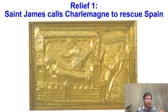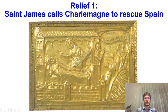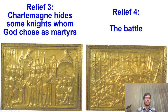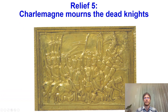Let's look at the story quickly. First, Saint James called Charlemagne to rescue Spain, showing him the road indicated by the stars. Second, the walls of Pamplona topple during the siege—God miraculously lets the walls fall so Charlemagne can enter Spain. Third, Charlemagne hides some knights whom God chose as martyrs, wanting to preserve them even though God told him they would die. Fourth, Charlemagne takes part in the battle. In relief five, the knights whom Charlemagne tried to preserve still died—God chose them as martyrs.